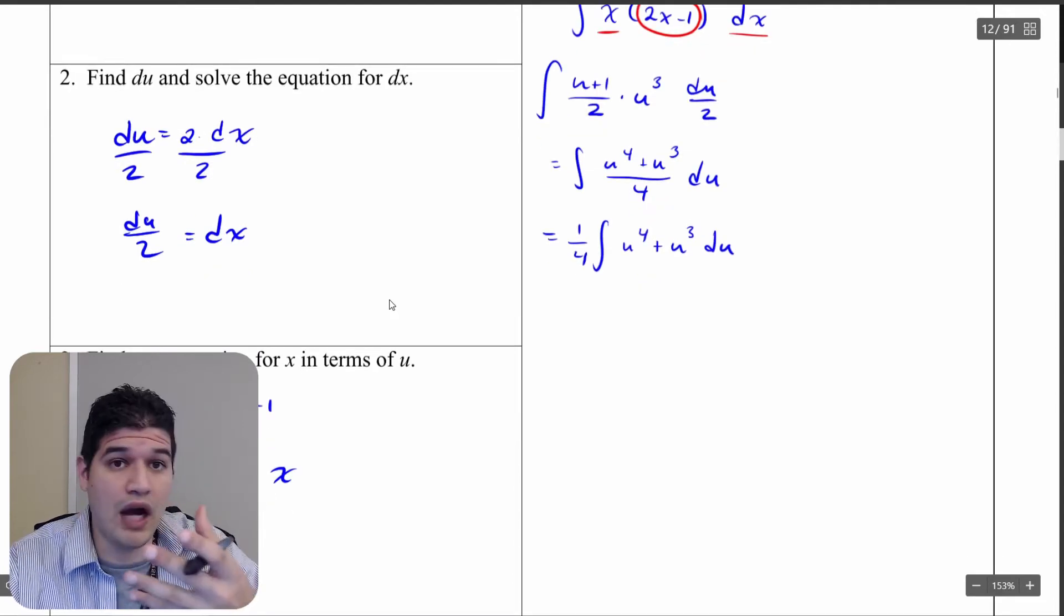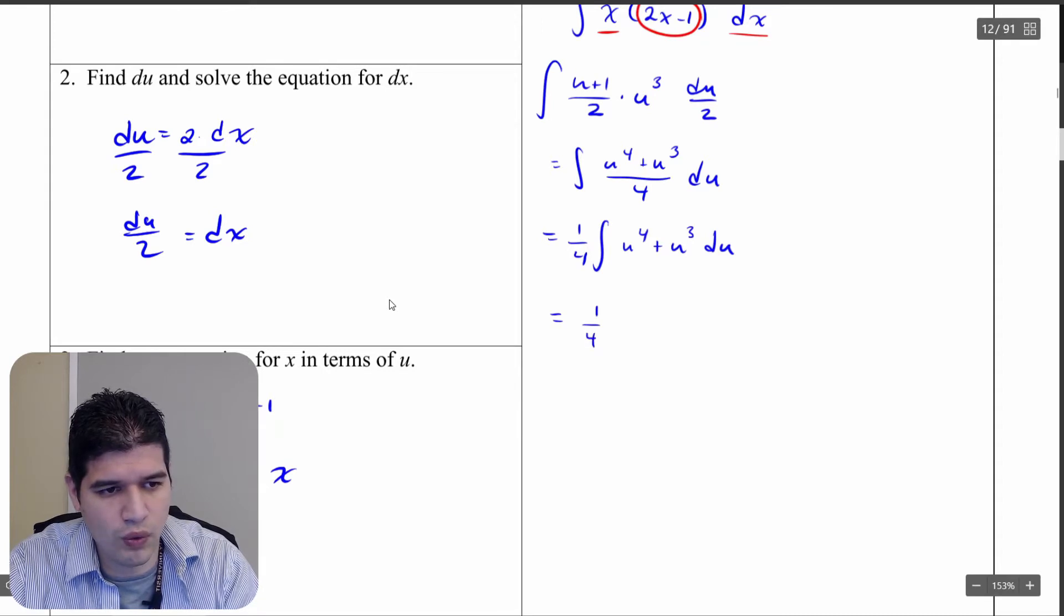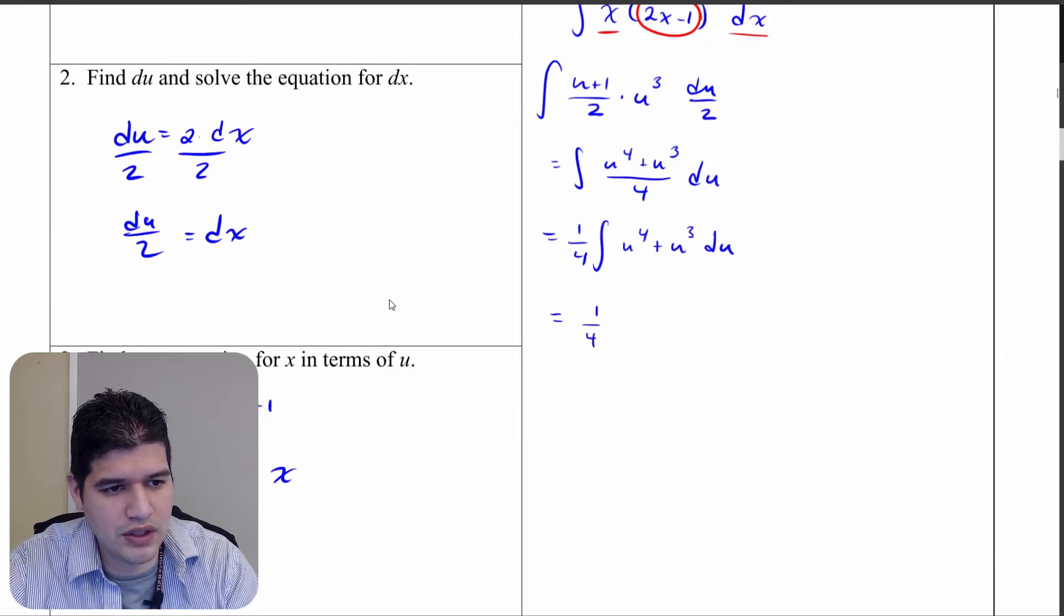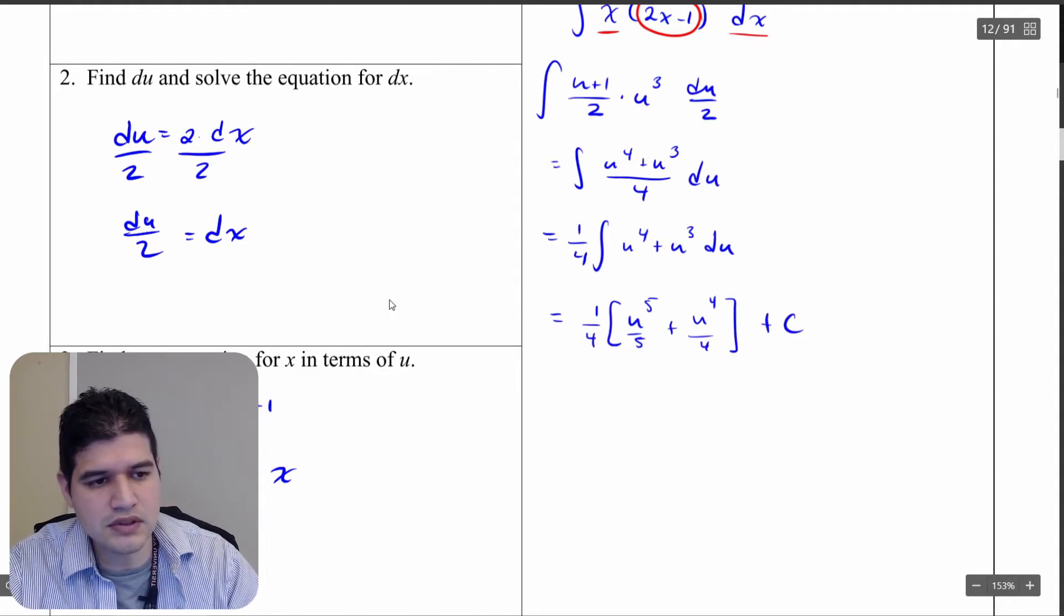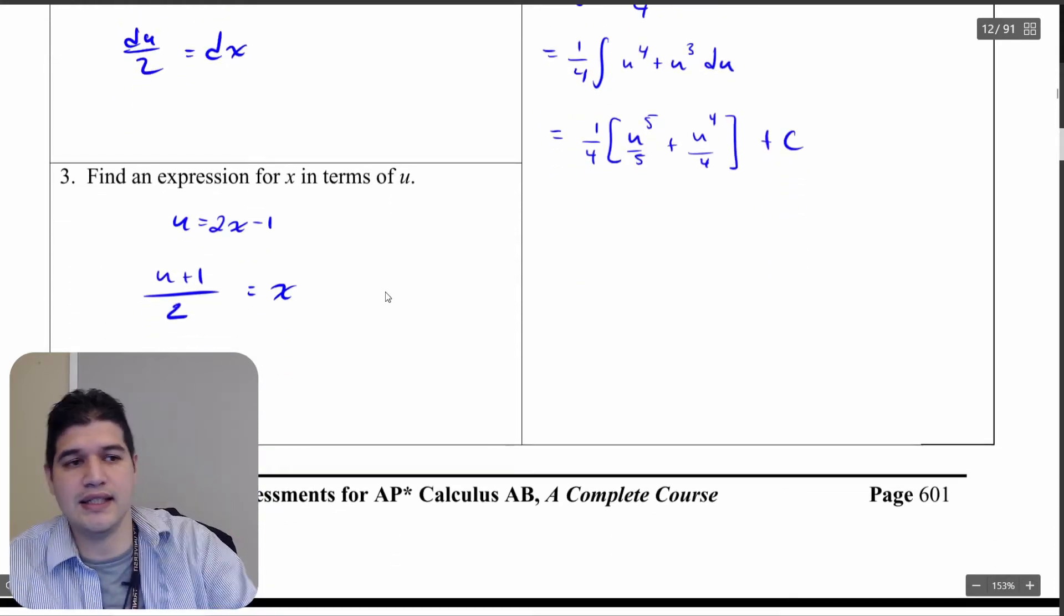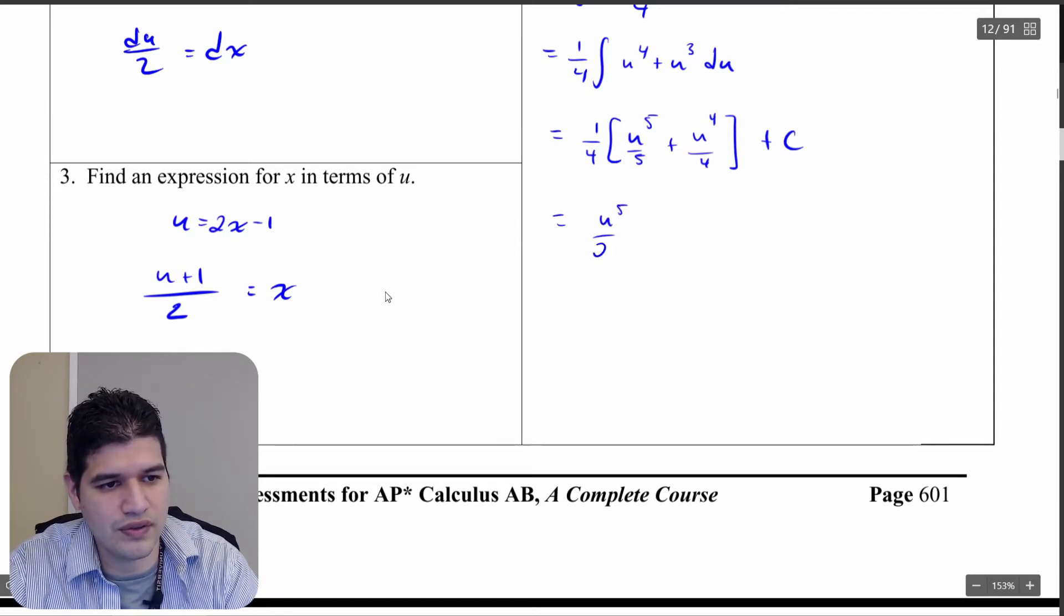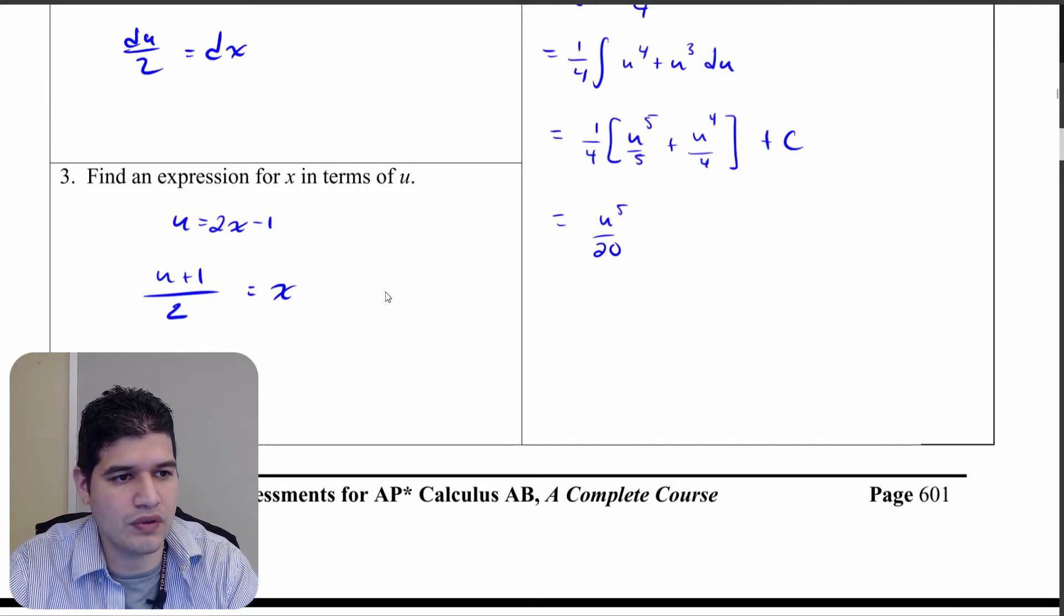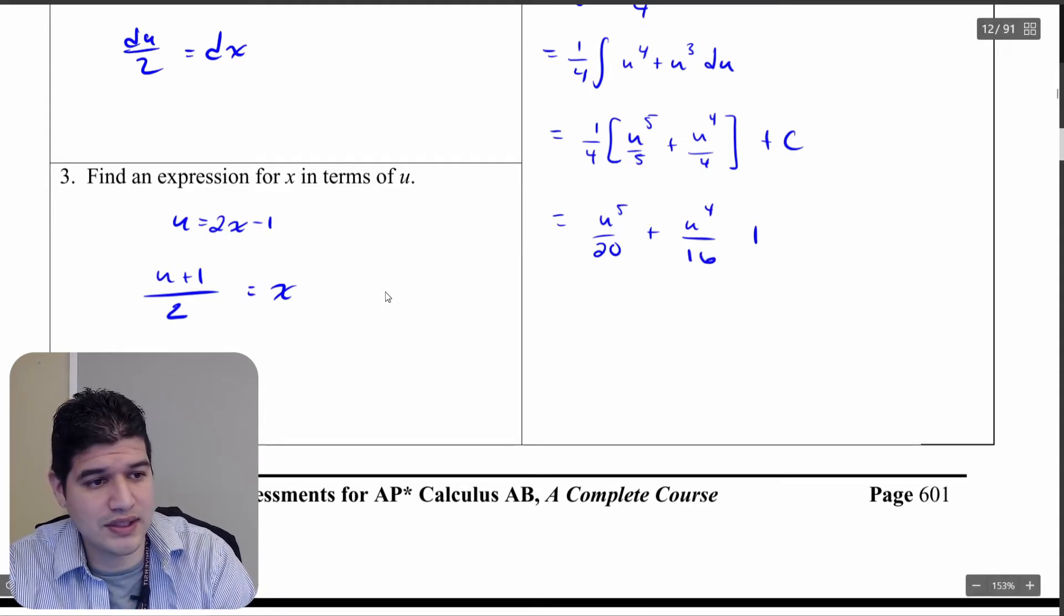So from here, I know how to do this anti-derivative. Let's go ahead and do it real quick. So one fourth and then add one to the exponent. So that's going to be u to the fifth divide by that result. Add one to the exponent u to the fourth divide by four and then add c. Let's go ahead and send that one fourth into each of those. So I'm going to get u to the fifth over 20. And then one fourth over one fourth, I'm going to get plus u to the fourth over 16. The last part of this, of course, is a plus c.